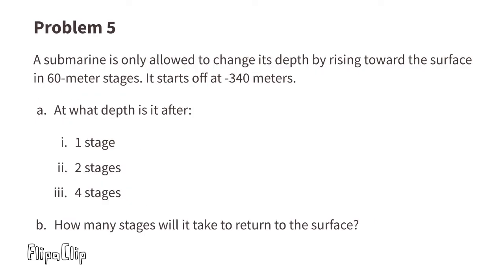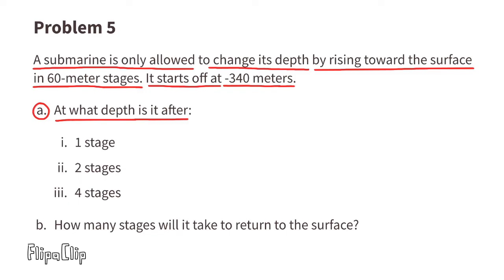Problem number five: A submarine is only allowed to change its depth by rising towards the surface in 60-meter stages. It starts off at negative 340 meters. Part a: At what depth is it after one stage? The submarine starts out at negative 340 meters below the surface of the ocean, and it's allowed to go up 60 meters at a time towards the surface.